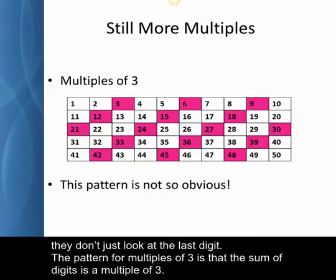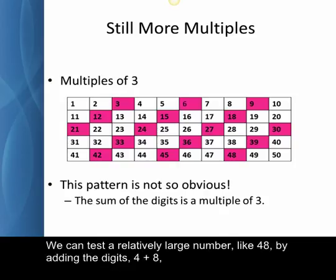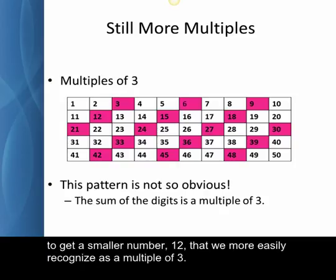They don't just look at the last digit. The pattern for the multiples of 3 is that the sum of the digits is a multiple of 3. We can test a relatively large number, like 48, by adding the digits, 4 plus 8, to get a smaller number, 12, that we more easily recognize as a multiple of 3.